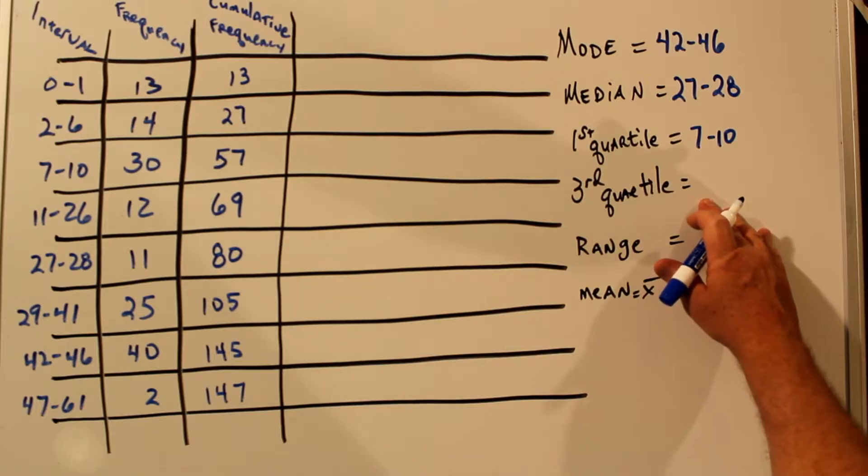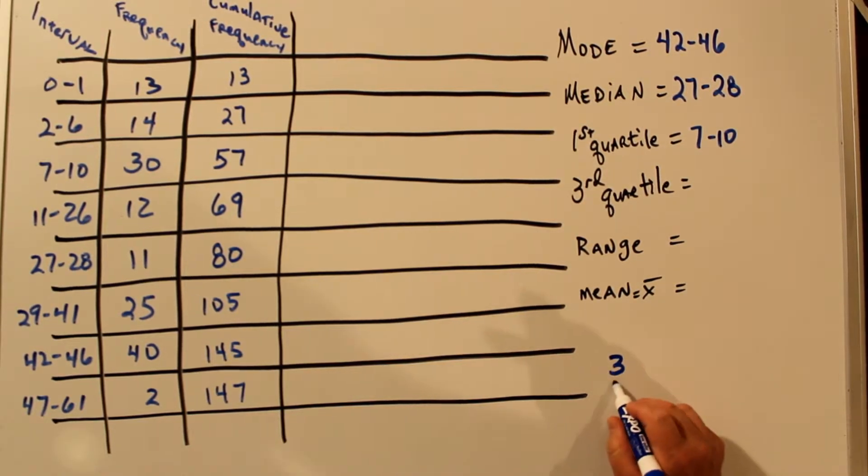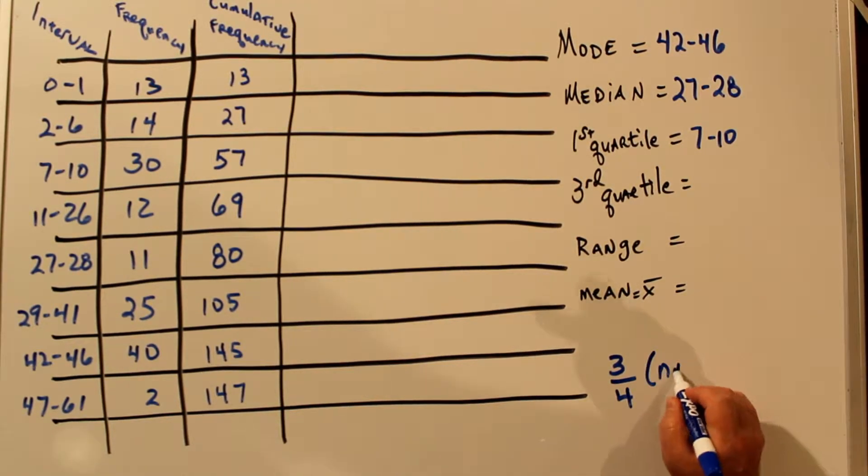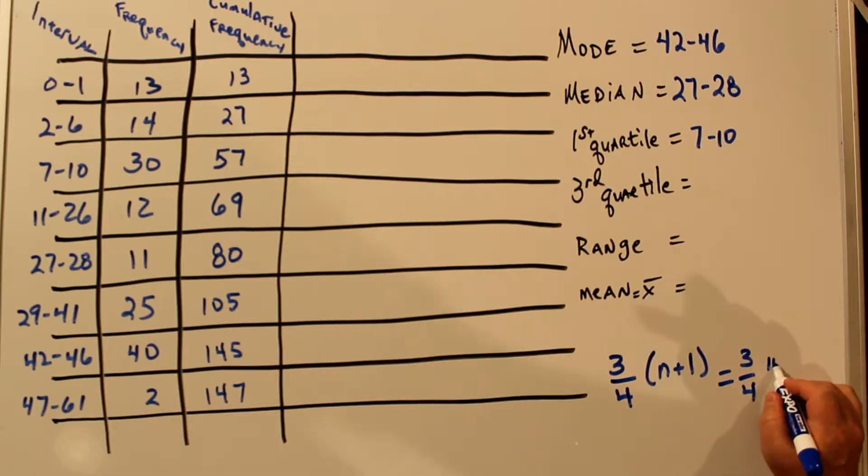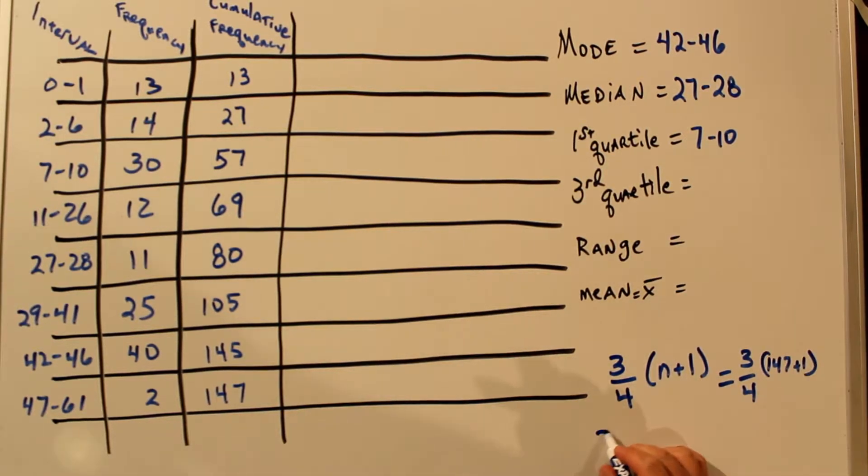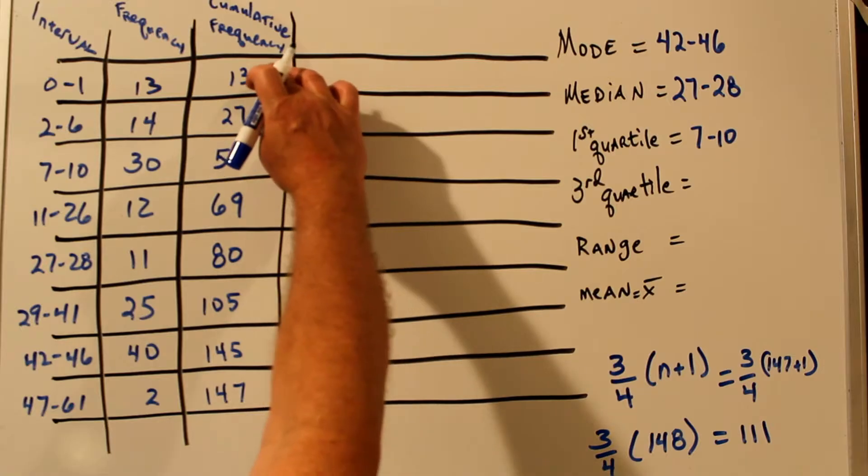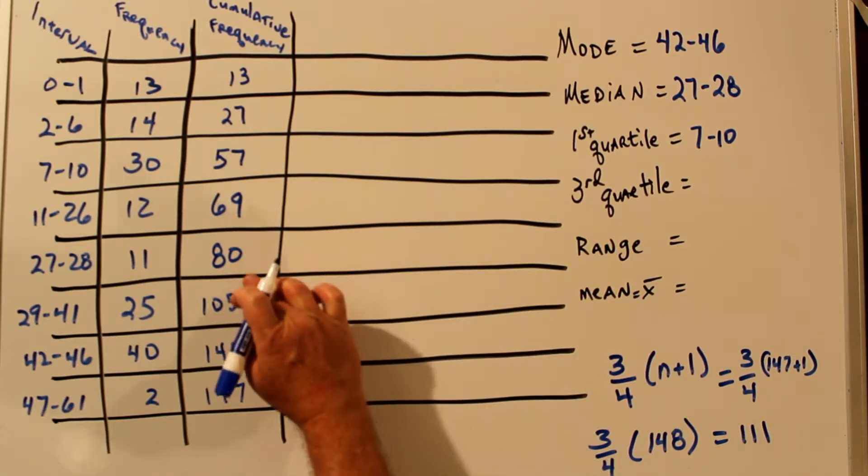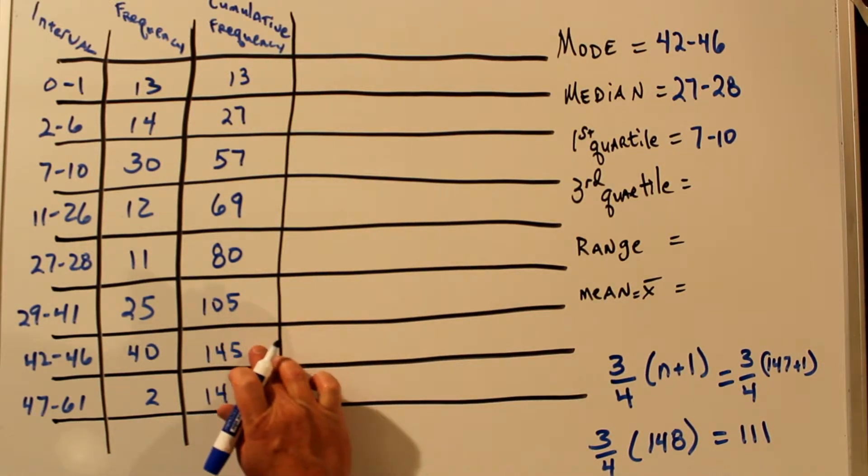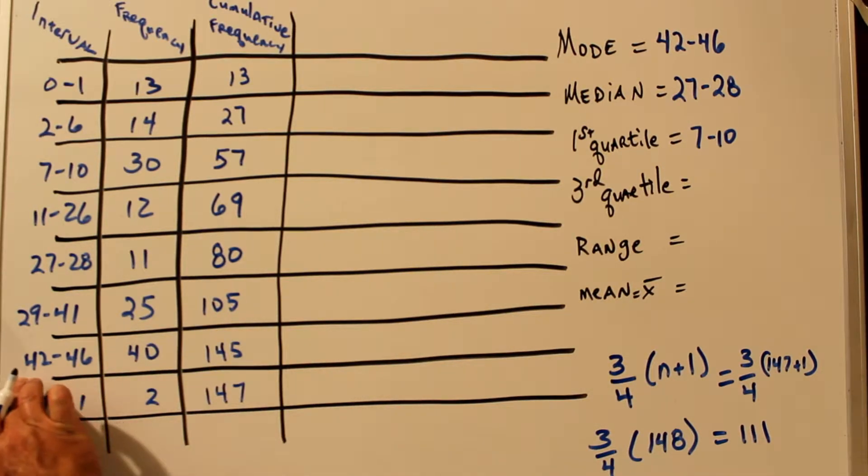The third quartile is found in a similar way, except this time we want three fourths of the way, N plus one, or three fourths of 147 plus one, which is three fourths of 148, which is 111. So we want to know which category contains the 111th data point. We'll look down our cumulative frequency list, 105 ends here. So the 111th data point would be in this category, 42 to 46.